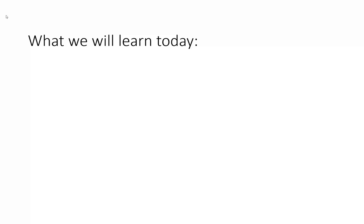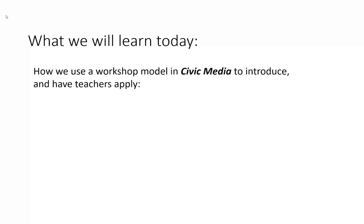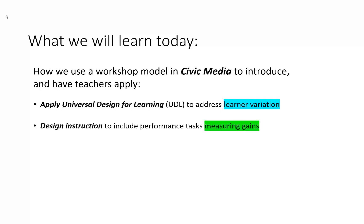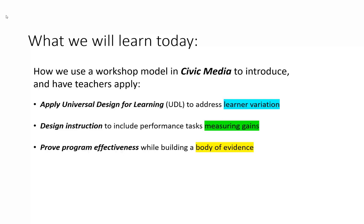What we're going to show in our workshop is how we use a model of civic media to introduce and have teachers apply Universal Design for Learning to address learner variation, how to design instruction to include performance tasks that allow you to measure gains, and how to prove program effectiveness while building a body of evidence. This is critical for early college high schools.